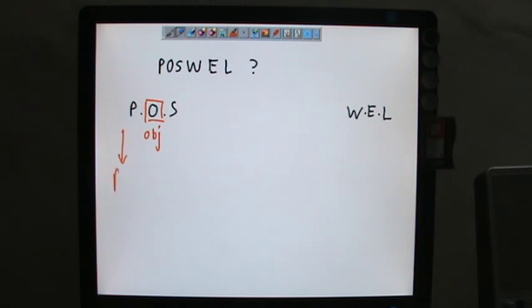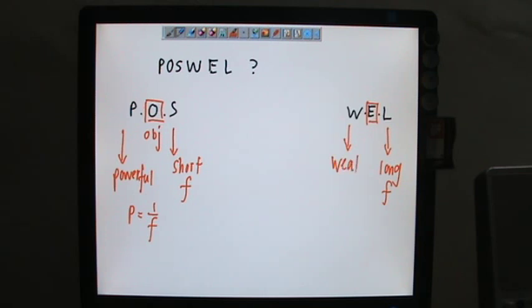Why powerful? Because based on P equals 1 over F, the objective lens has focal length which is really short. As for the eyepiece lens, it has very long focal length, which is why it is weak, or you can say it is low power.